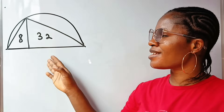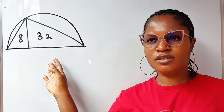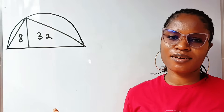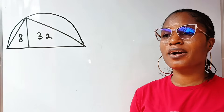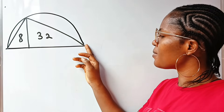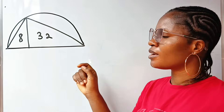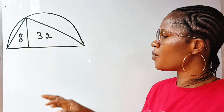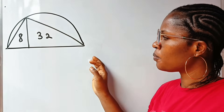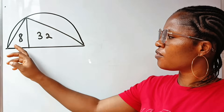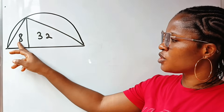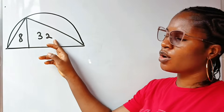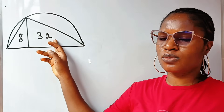This is not an easy question, but together we can find the solution. Welcome back to my channel. We are asked to find the area of this semicircle if the area of this triangle is 8 and the area of this triangle is 32.